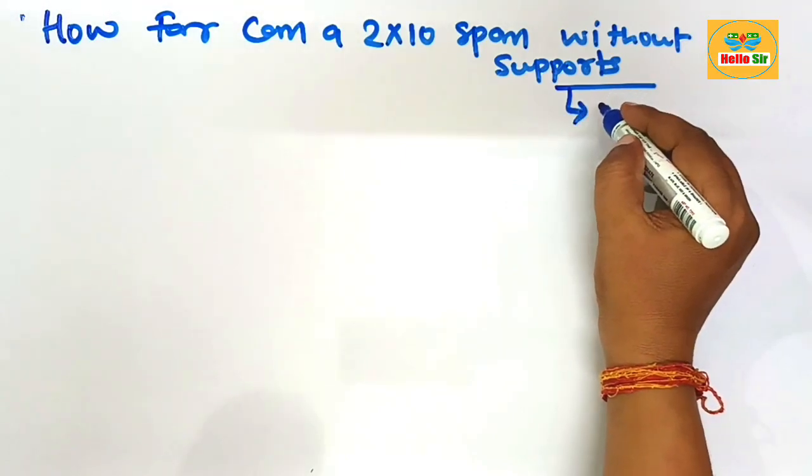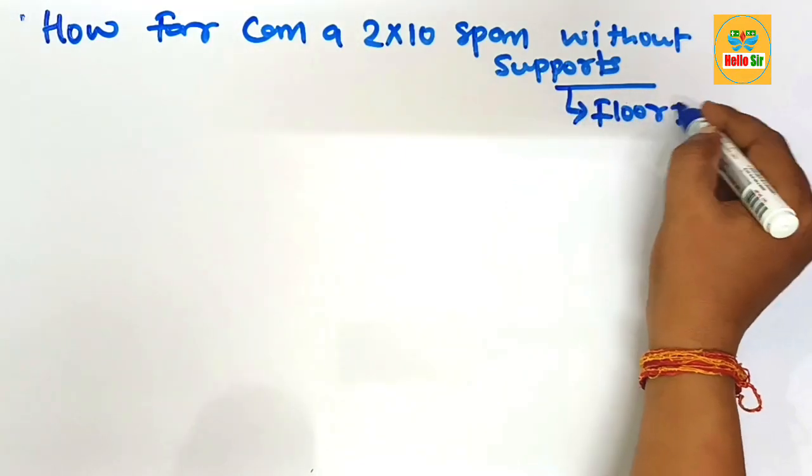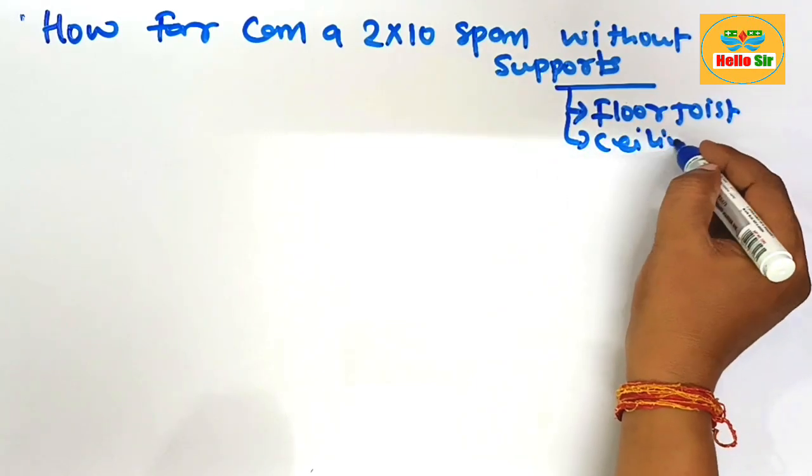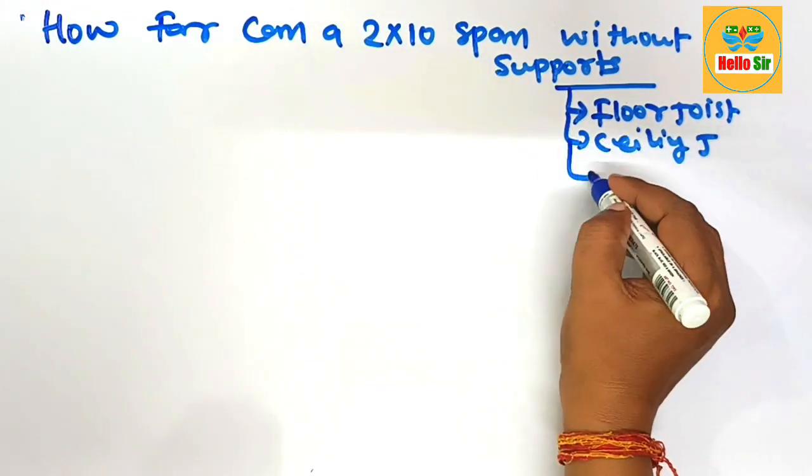You can figure out the floor joist span, the ceiling joist, and the rafter span.